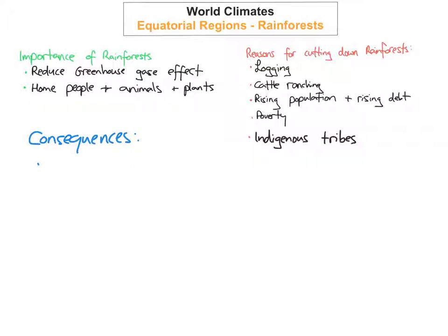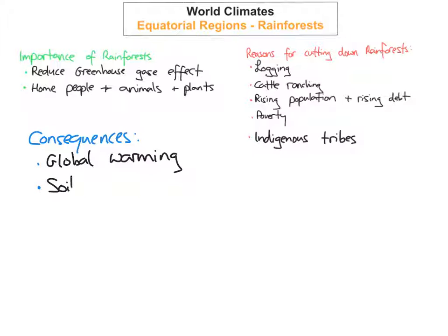We're now going to look at the consequences of the huge amount of rainforest that's been chopped down. The first big consequence is global warming. Rainforests produce so much oxygen and absorb so much carbon dioxide, but the burning of these rainforests is adding more CO2 to the atmosphere. At the same time, fewer trees means less CO2 is being absorbed, so both effects are contributing to an increase in carbon dioxide and global warming.